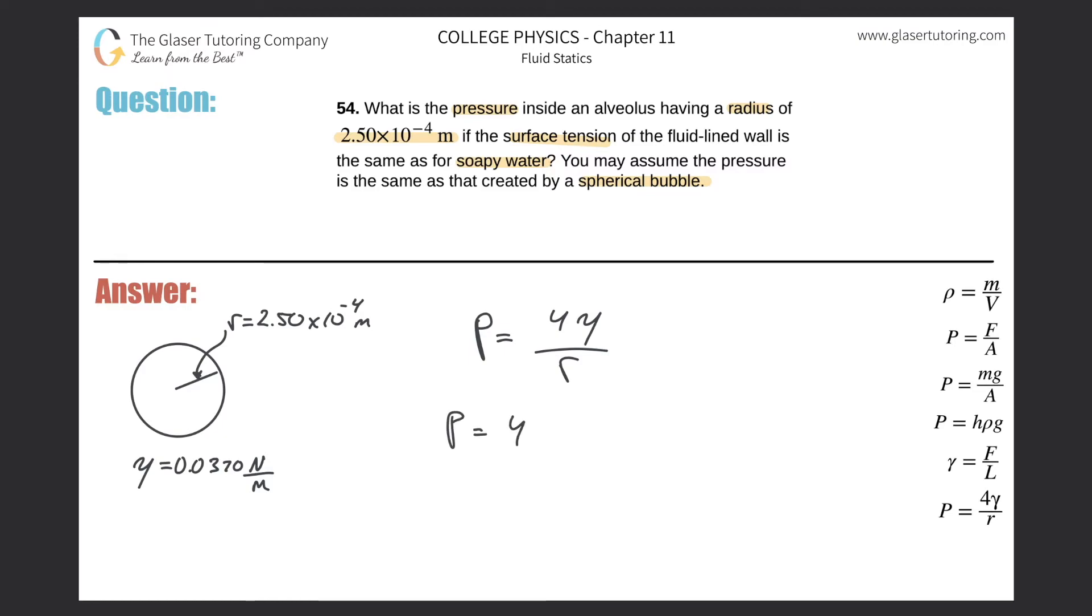So the pressure here is going to be 4 times the gamma value. Now, the gamma value told us that of soapy water. The surface tension is similar. This you have to look up. I don't think you'll have to memorize that. So here's the value we wanted in terms of Newton per meter. Standard unit for force, standard unit for length. So we are good. We can plug it all in, 0.0370, all divided by the radius of 2.50 times 10 to the minus 4th.